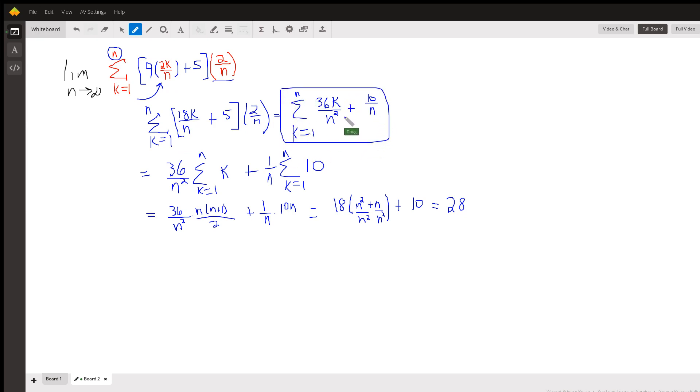If I take 9 times 2k over n, I get this. If I distribute the 2 over n, I get this. And then using theorems about summation notation, 36 over n squared is just a constant. You can put that constant out front and just get the sum from k equals 1 to n of k.